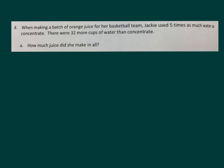Here's the final problem. When making a batch of orange juice for her basketball team, Jackie used 5 times as much water as concentrate. So here's one unit for the concentrate. And then this would be five times as much. There were 32 more cups of water than concentrate. That means that this right here is 32. If that's 32, then each of these looks like it would be 8. Each unit is 8.